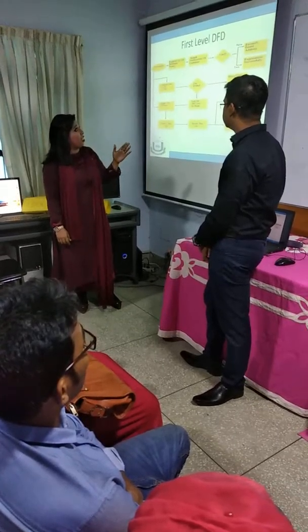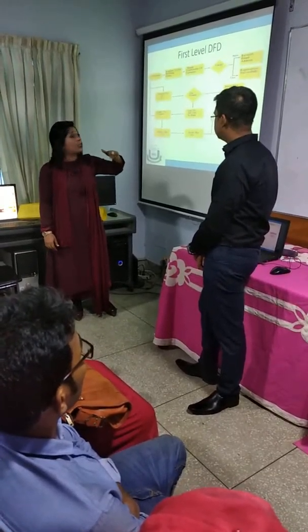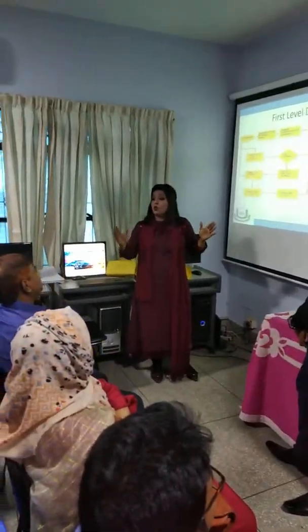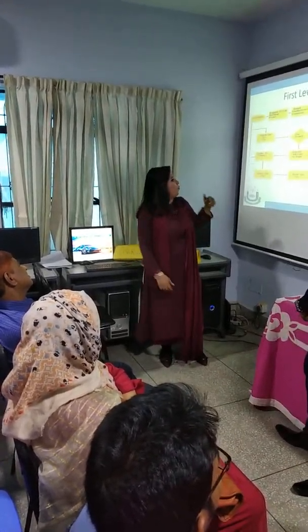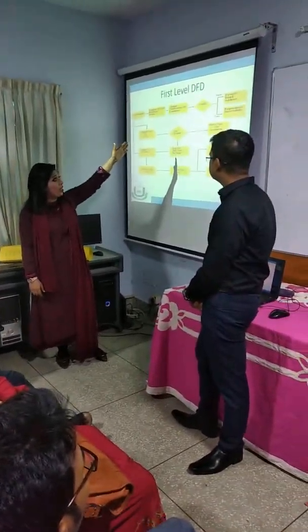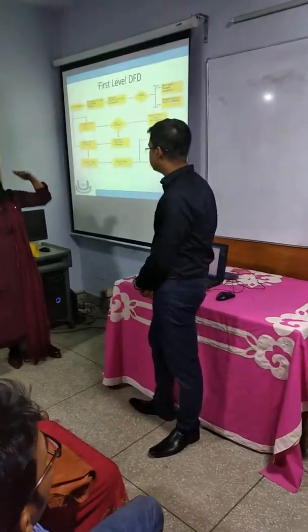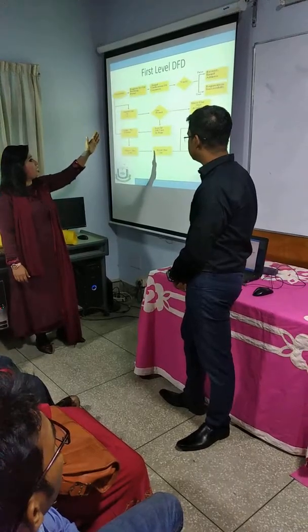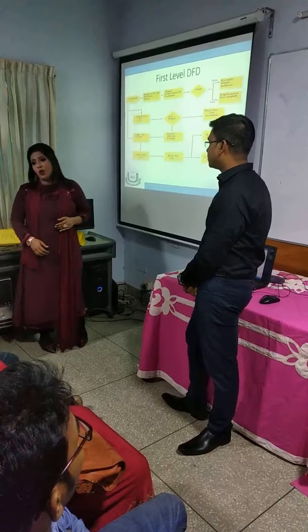This is the first level DFD — Data Flow Diagram — showing how data flows through the system. This DFD is only for the customer; we have other DFD diagrams too, but due to shortage of time we kept the slide simple. The customer goes for registration, then there is an email verification. If verification is true or false, they get the required response. Then they can search for cars; if the car is found, the page is directed to the list of cars.